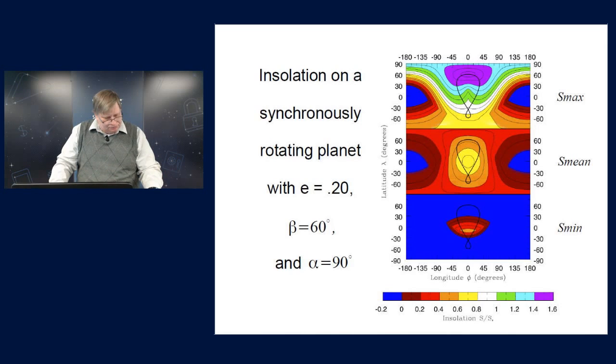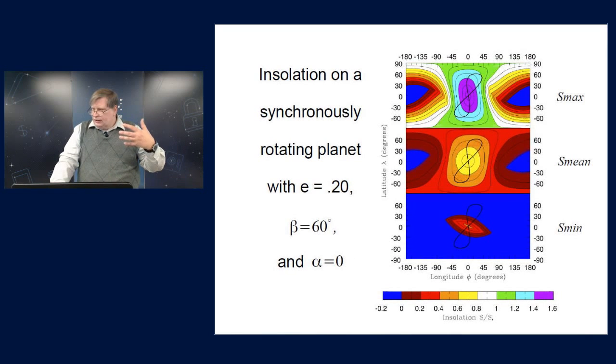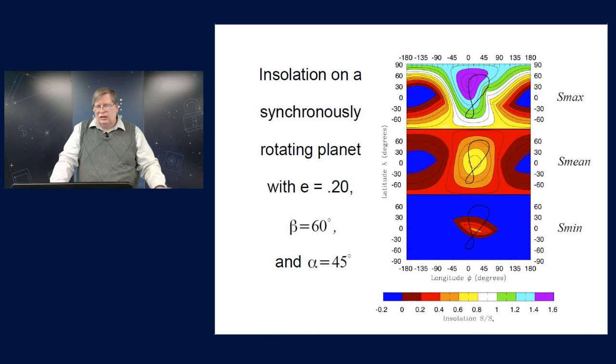That's a synchronously rotating case. By the way, I want to point out that these extra colors that you're seeing in the top panel, the purples and the greens and so on, are because of the planet's eccentricity causes the insolation to exceed the solar constant or the extra solar constant at those locations. So I needed some extra colors for that.